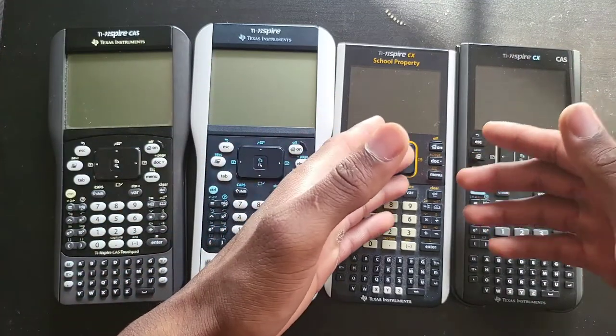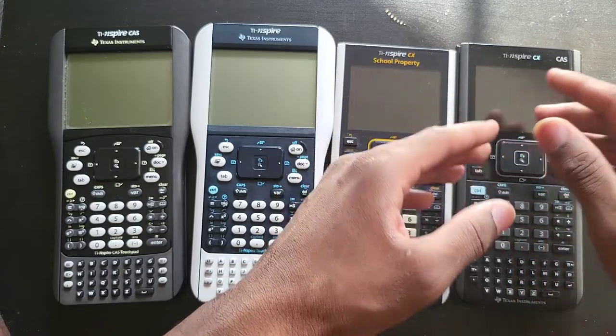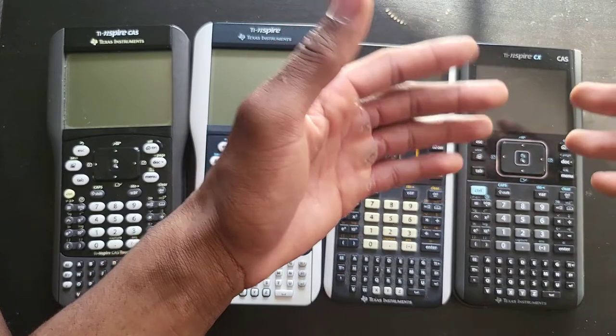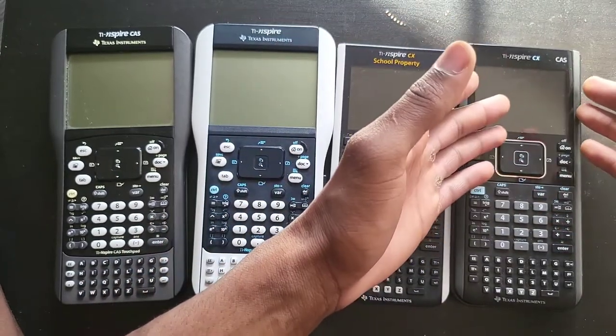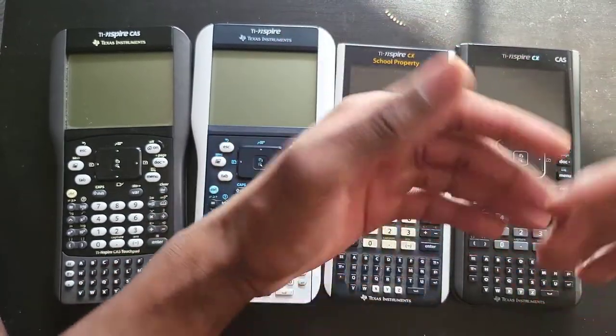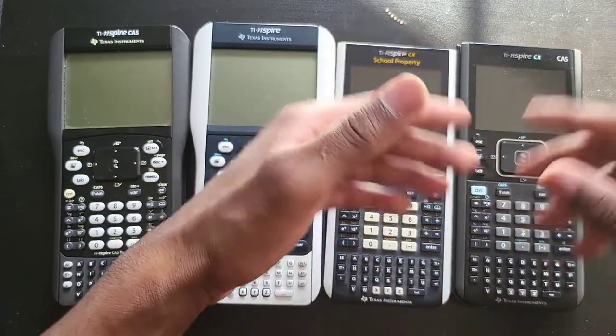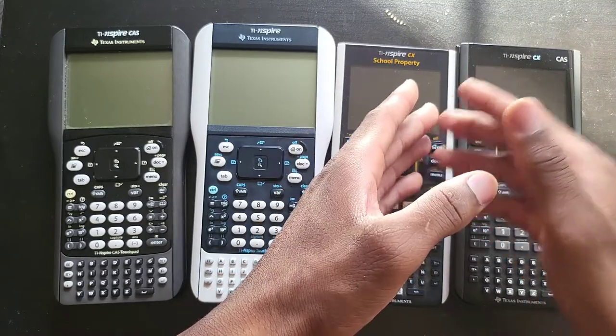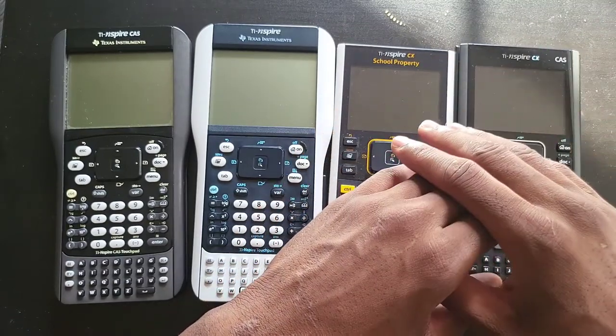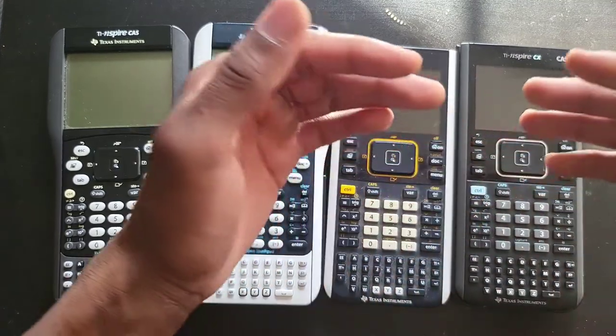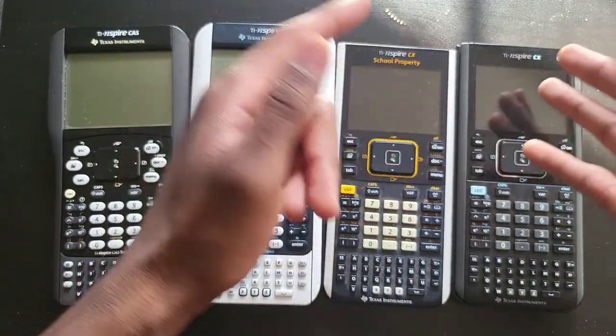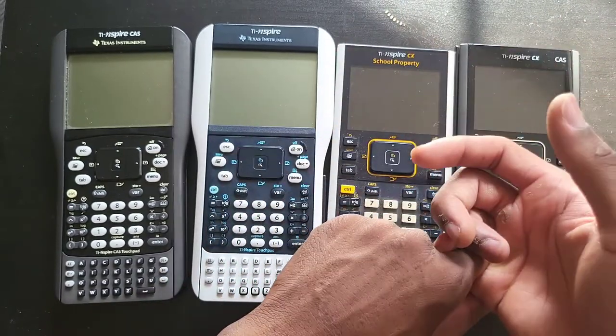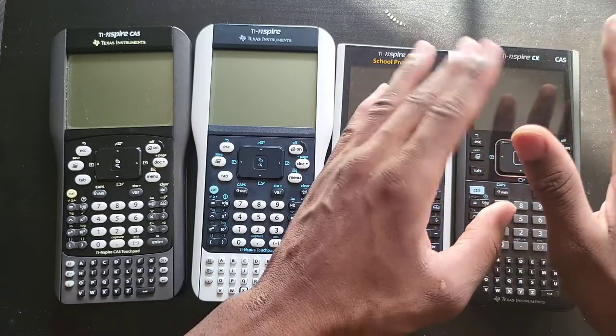These guys have the same processor. The only difference between the CAS and the non-CAS model is that this one has computer algebra system, meaning you can simplify expressions, solve equations, and some other goodies. But besides that, the hardware is pretty much the same thing - same processor, same amount of RAM, same amount of ROM storage.